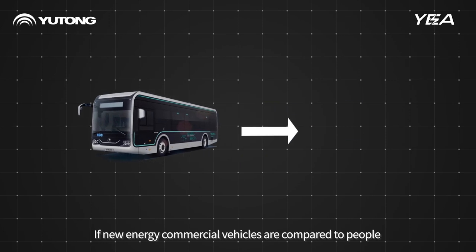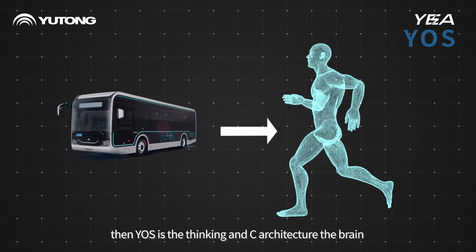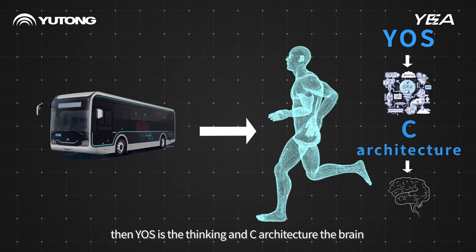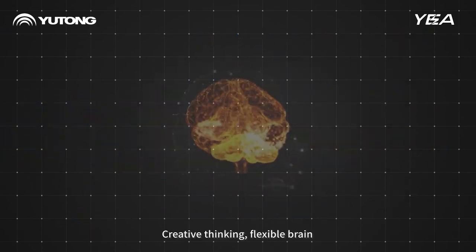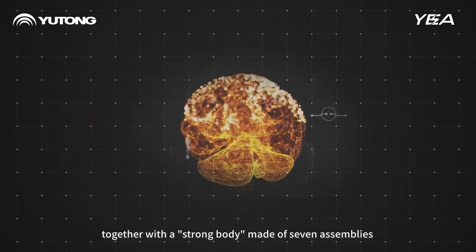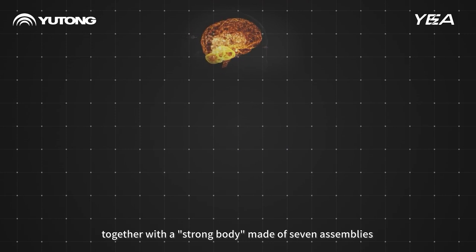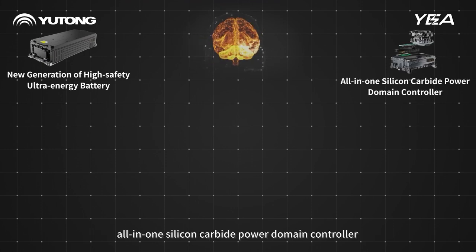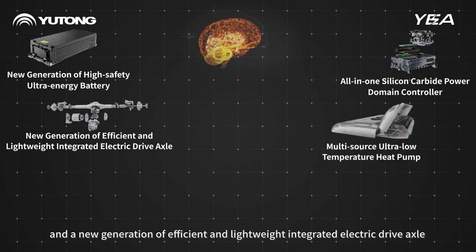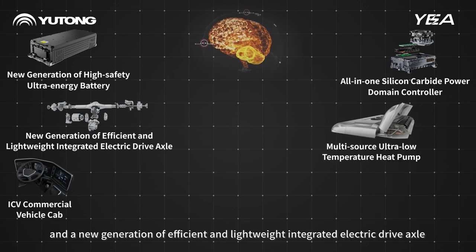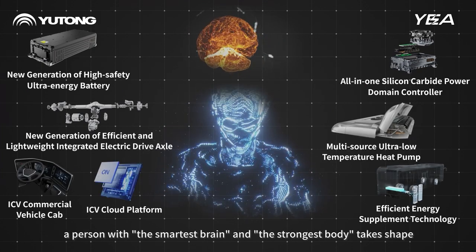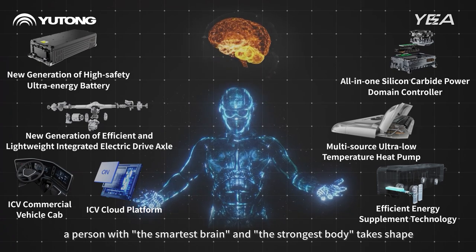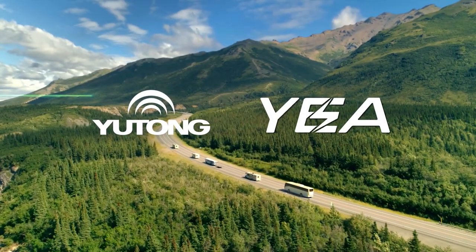If new energy commercial vehicles are compared to people, then Y-OS is the thinking and C-Architecture the brain — creative thinking, flexible brain — together with a strong body made of seven assemblies, including a new generation of high-safety ultra-energy battery, all-in-one silicon carbide power domain controller, and a new generation of efficient and lightweight integrated electric drive axle. A person with the smartest brain and the strongest body takes shape.